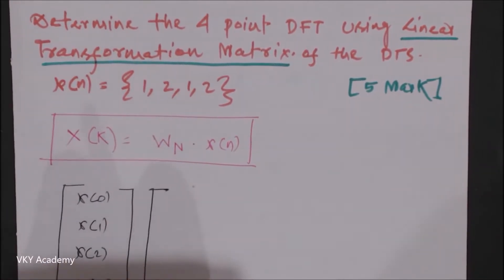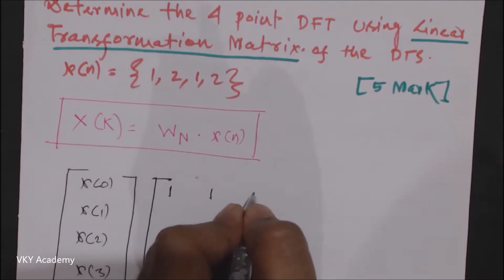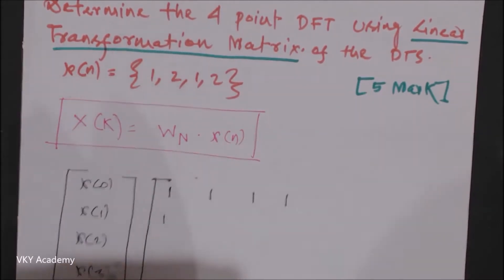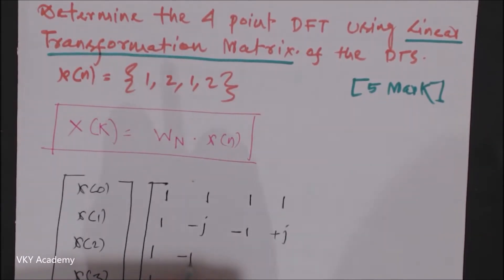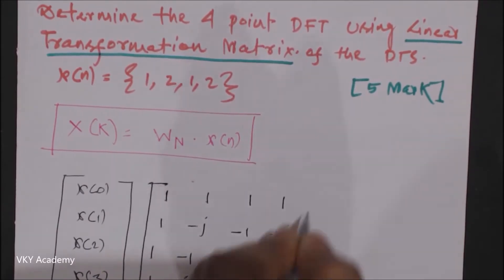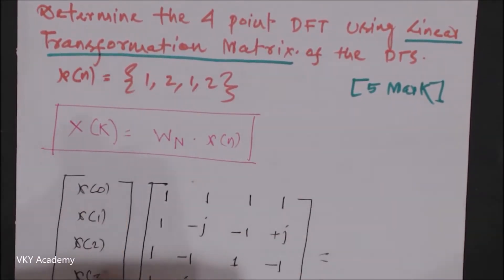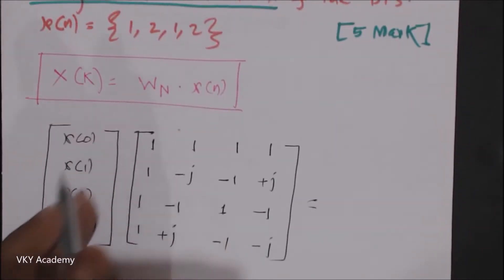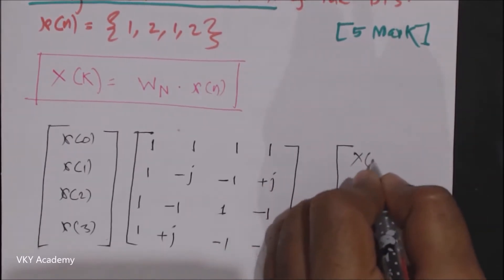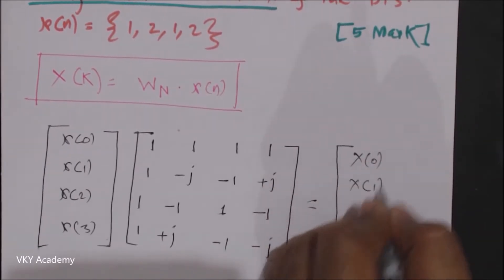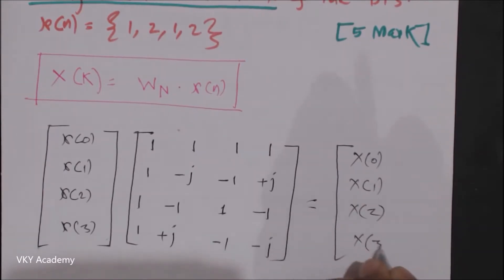When multiplied with the W matrix — which has entries: row 1: 1, 1, 1, 1; row 2: 1, -j, -1, +j; row 3: 1, -1, 1, -1; row 4: 1, +j, -1, -j — it generally produces the outputs X(0), X(1), X(2), and X(3).